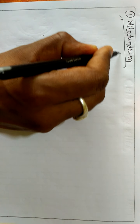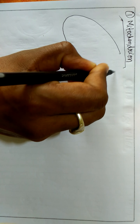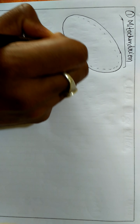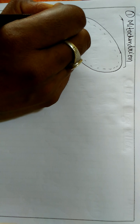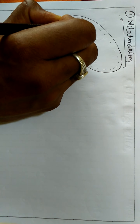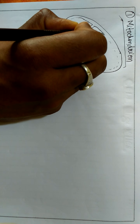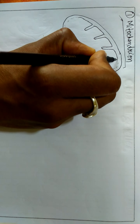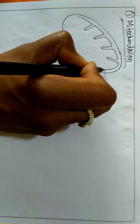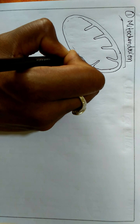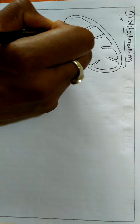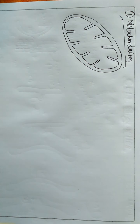Now I will draw the structure of the mitochondria. This is the outer membrane of the mitochondria. For the inner membrane, first draw with a dotted line, then at certain intervals you make infoldings. These infoldings are called cristae. These foldings increase the surface area of the inner membrane.